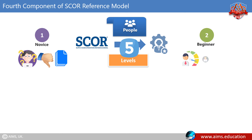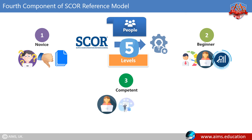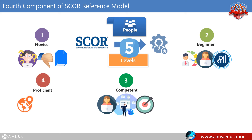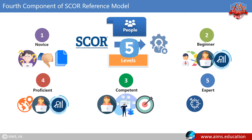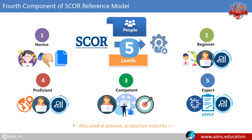Competent — understands the work and can determine priorities to reach goals. Proficient — oversees all aspects of the work and can prioritize based on situational aspects. Expert — has an intuitive understanding and can apply experience patterns to new situations. These competency levels are also used as process or practice maturity levels.